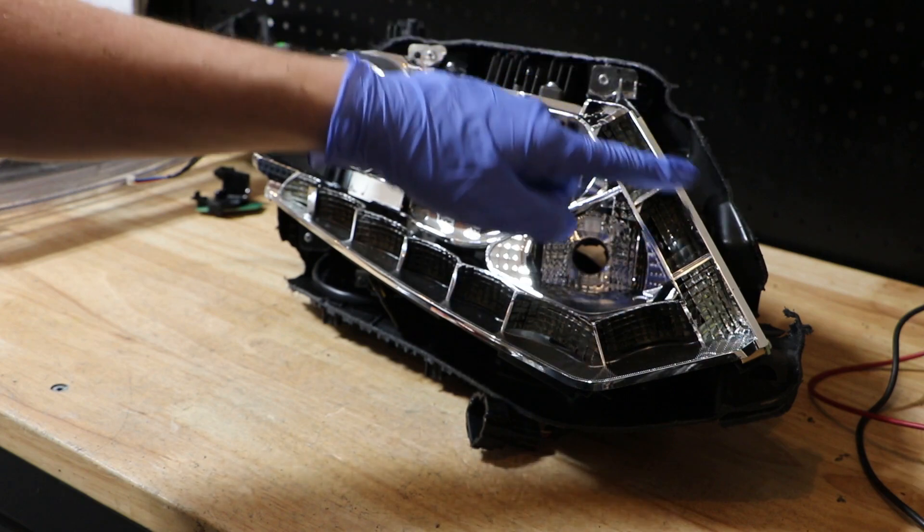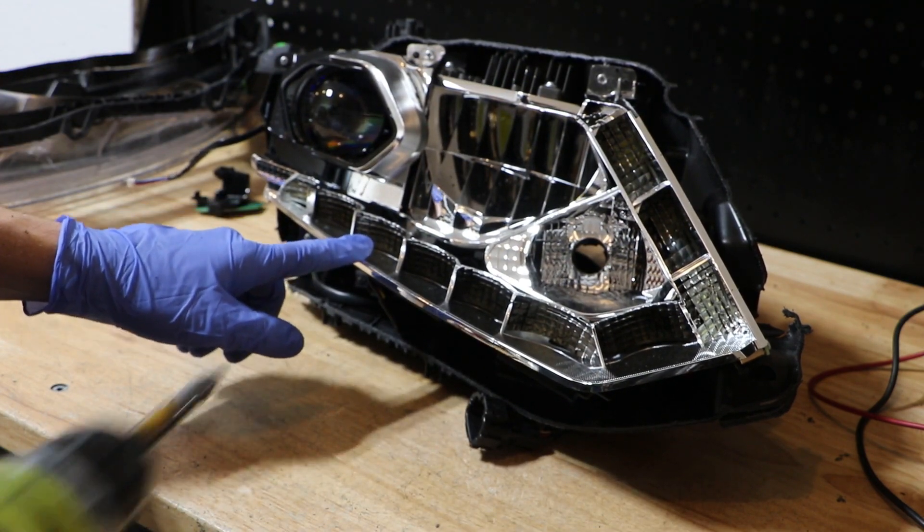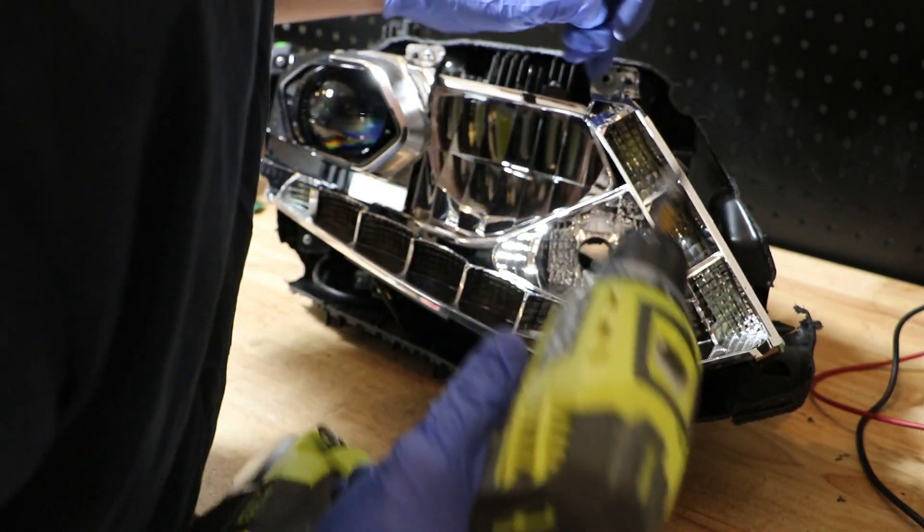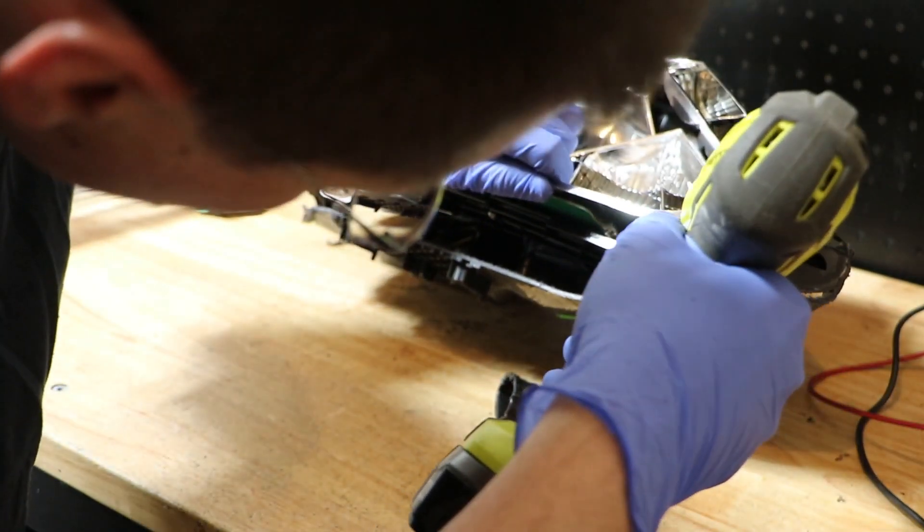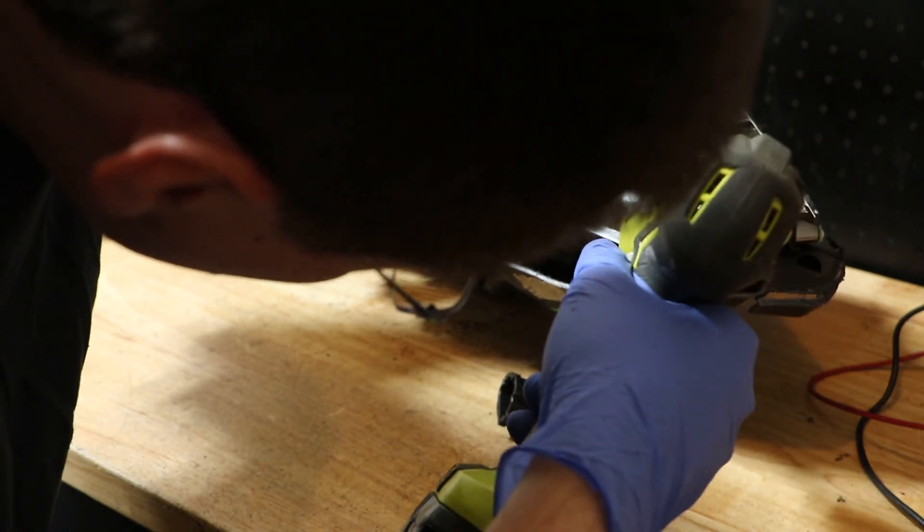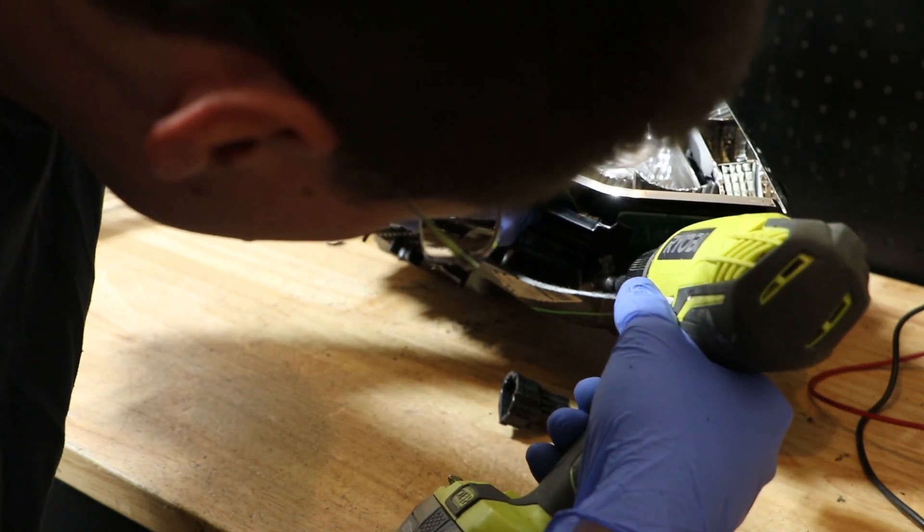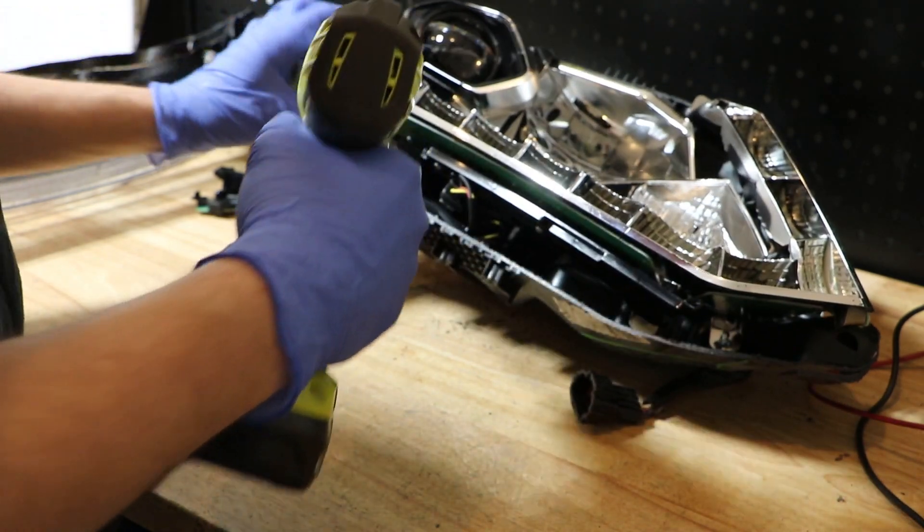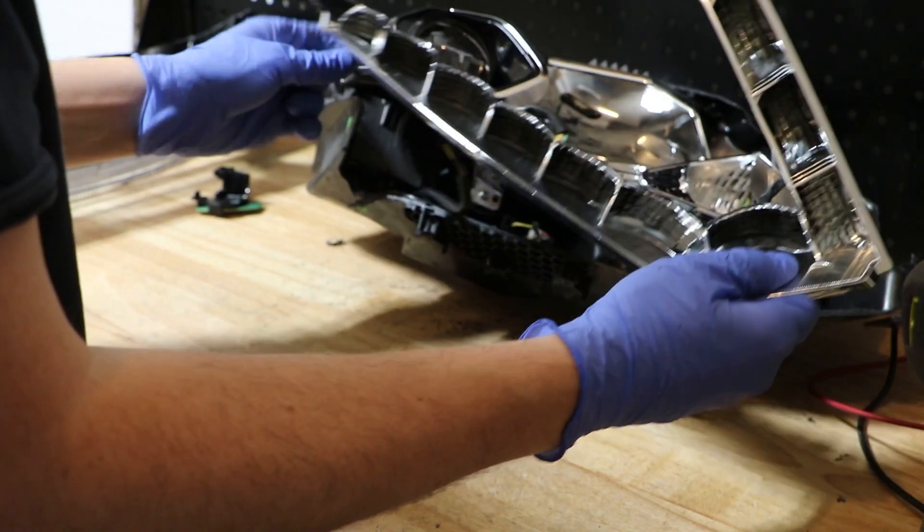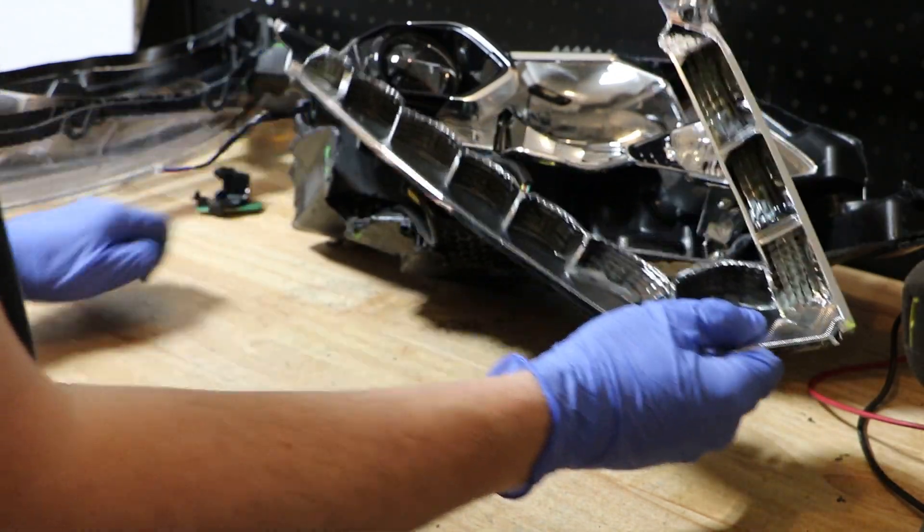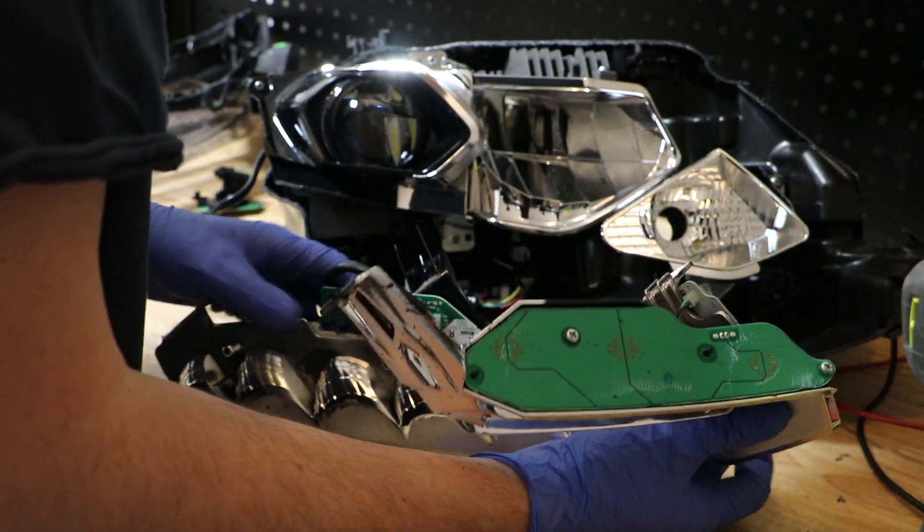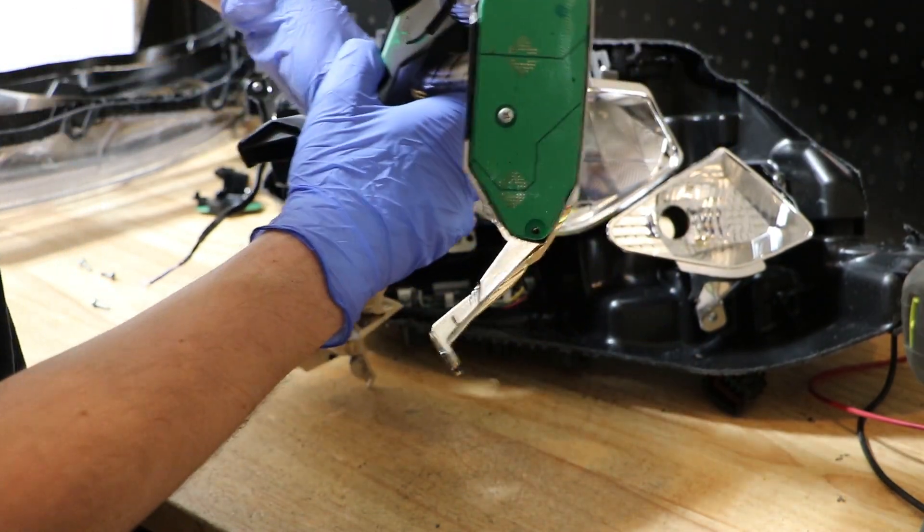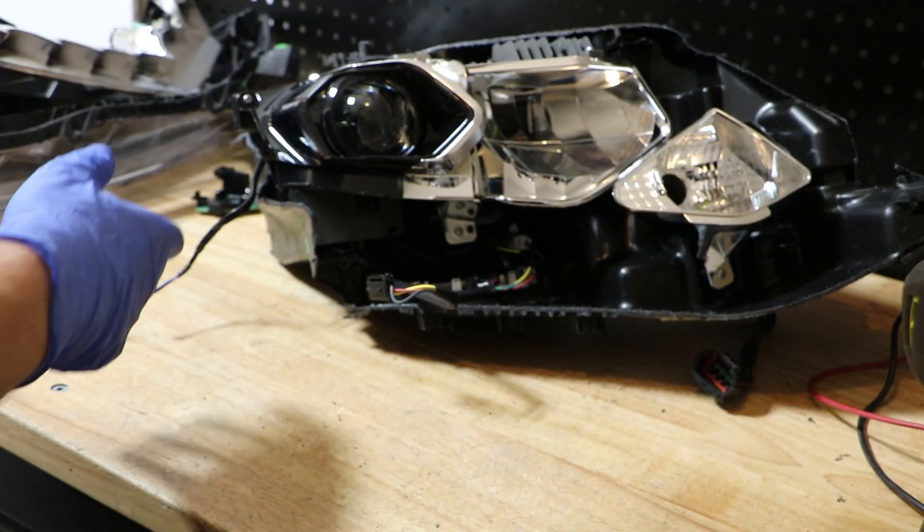I'm going to start by removing the screws holding on the daytime running light. There were three screws holding on the daytime running light. With that out of the way, we will unclip it from the harness and set it aside.